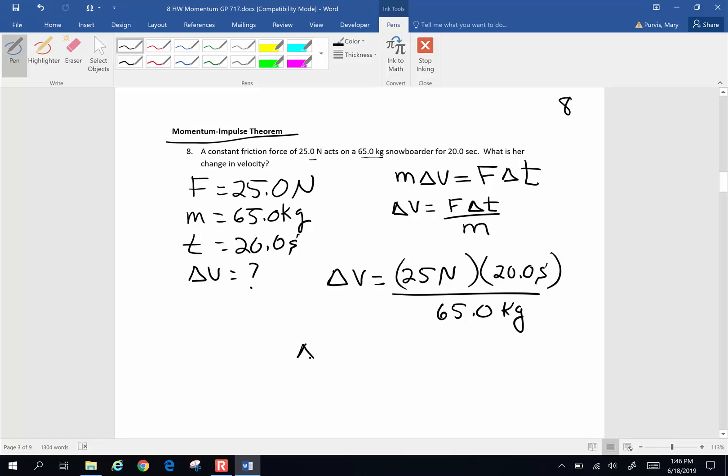The change in velocity then will be, and I'm going to grab my calculator, 25 times 20 divided by 65, and I end up with, down to 3 sig figs, 7.69 meters per second will be the change in velocity on the snowboarder, which is kind of a nice, simple, little problem.